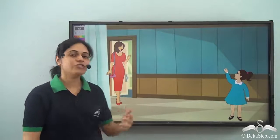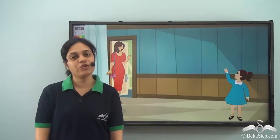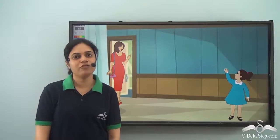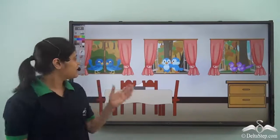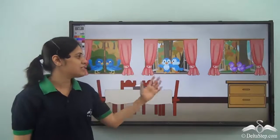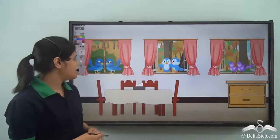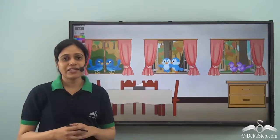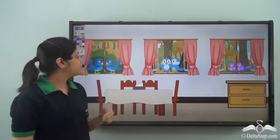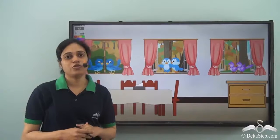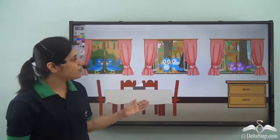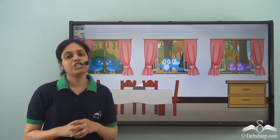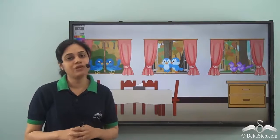Sara's mother has gone to visit her grandmother. She tells Sara to be a good girl and take care of the household. Sara sees birds sitting on the windows and remembers that her mother gives food to these birds every day. Being a good girl, she decides to give food to them, but first she needs to know how many birds there are.